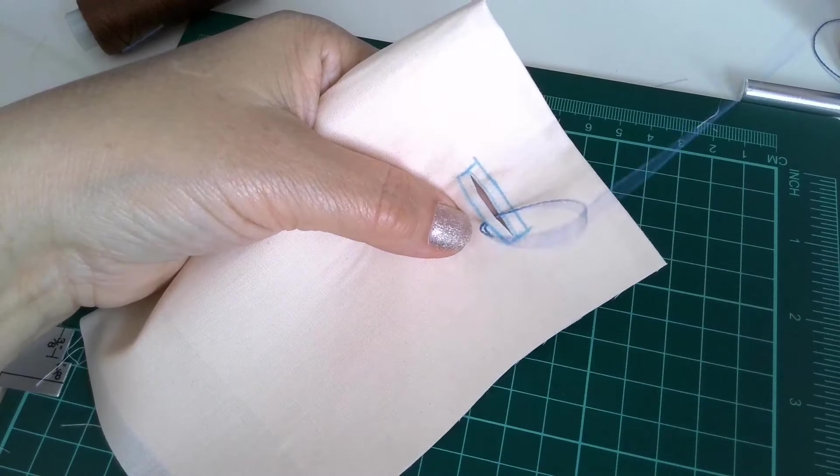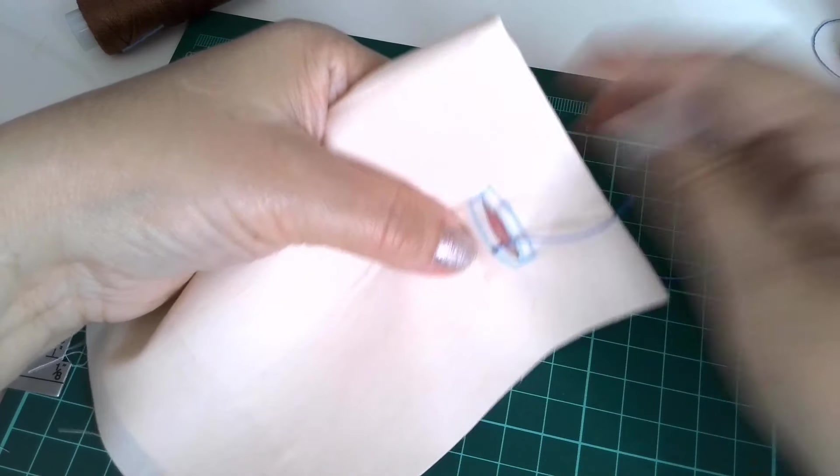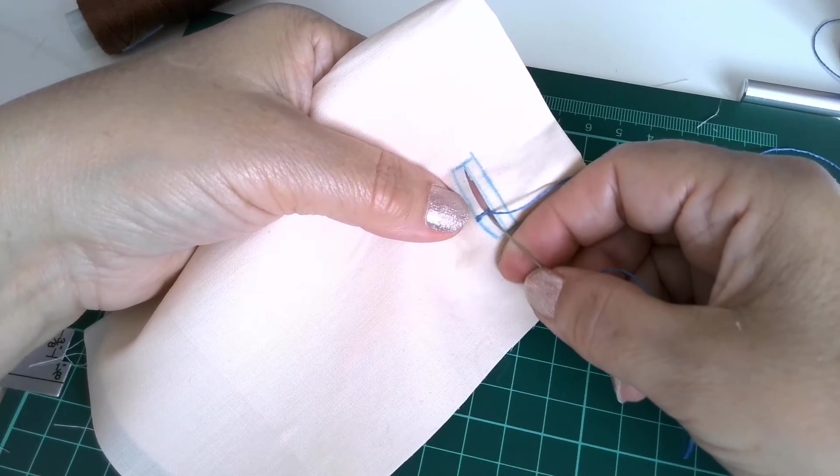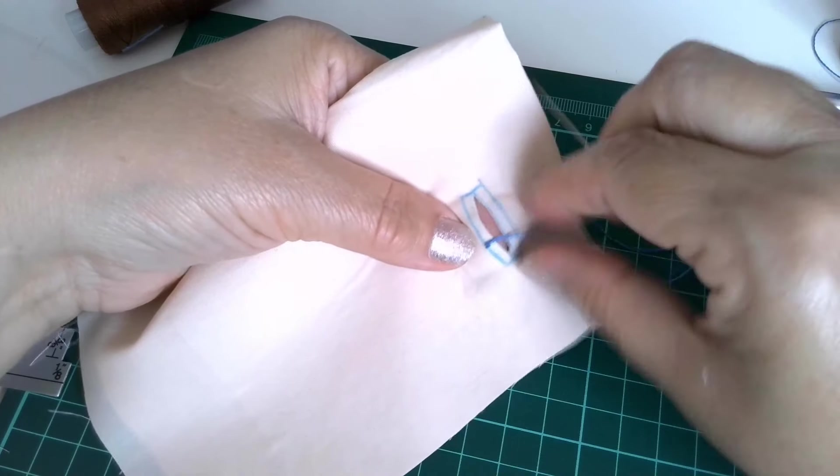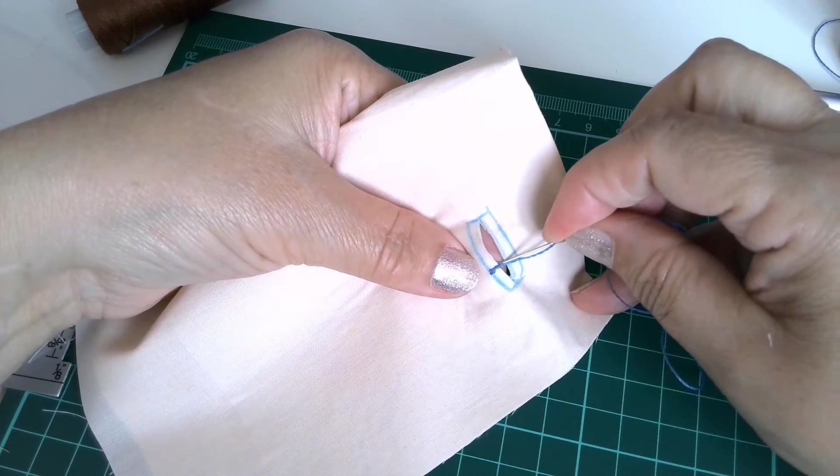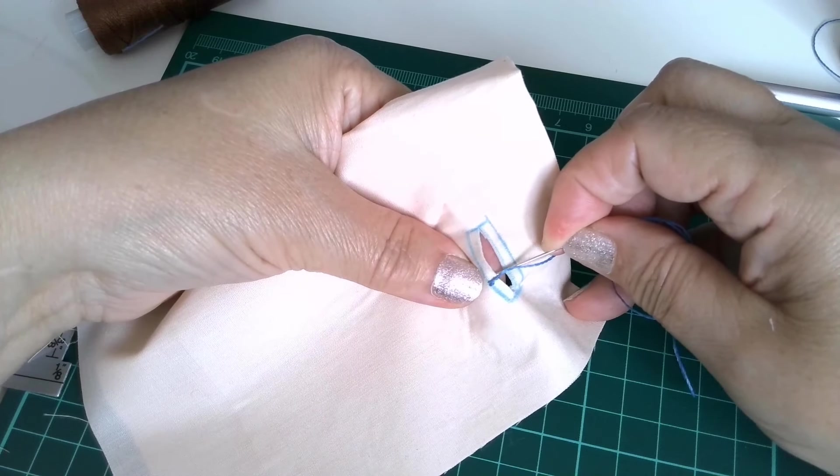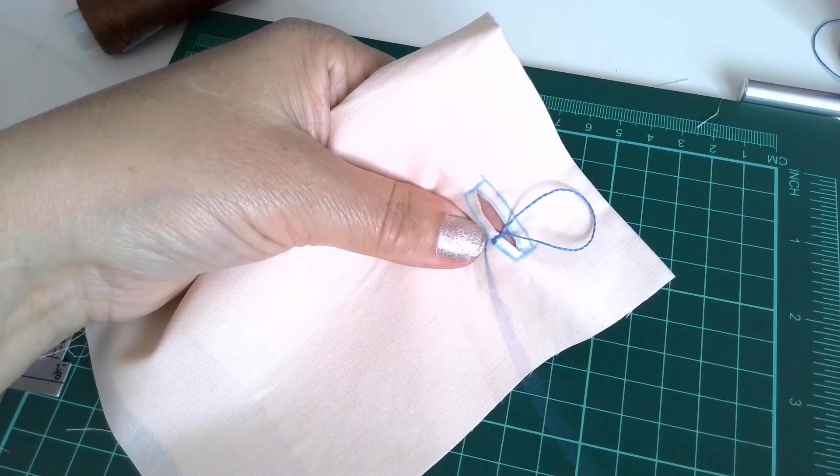Twice. One, two. So I can make a knot on top here, right at the edge of the cut. Okay, now I can continue. It's not really easy to keep equal distance between stitches. This is buttonhole stitch.